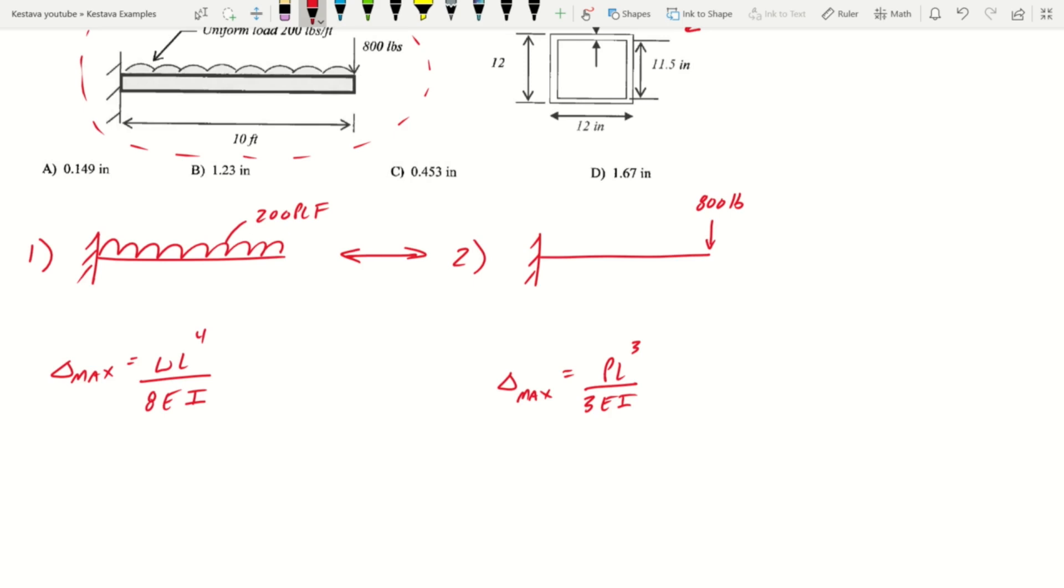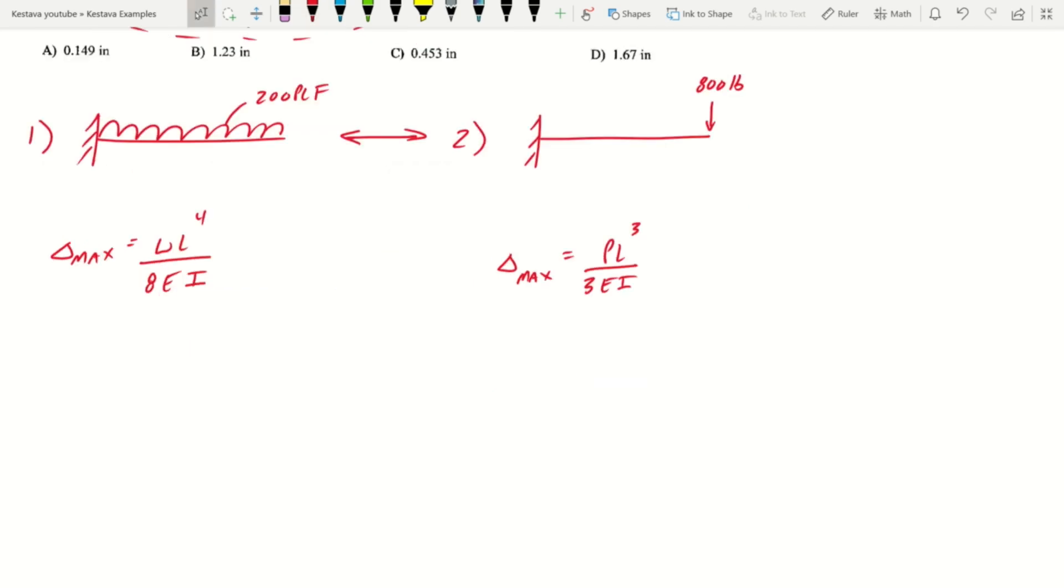This isn't stuff that you're trying to remember in this exam. These are equations given to you in your steel manual. You want to know that you can always flip to this table 3-23. This was my go-to main source of information for the PE structural specific exam. Really use it, don't try to memorize, know where to go and find the information.